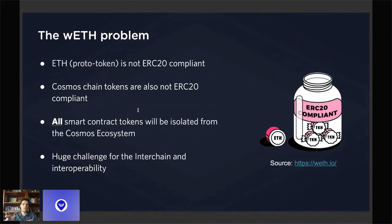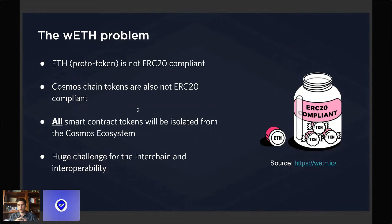So there is no intraoperability between them. If you have a wallet and you want to query a balance, you will have to query through the EVM JSON-RPC client and also query the balance for the account that lives within the Cosmos chain. This creates a huge challenge for all the interchain and interoperability because of this context isolation.